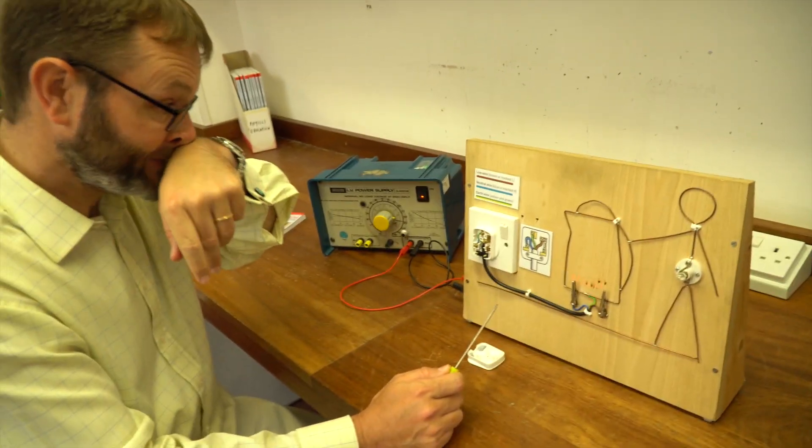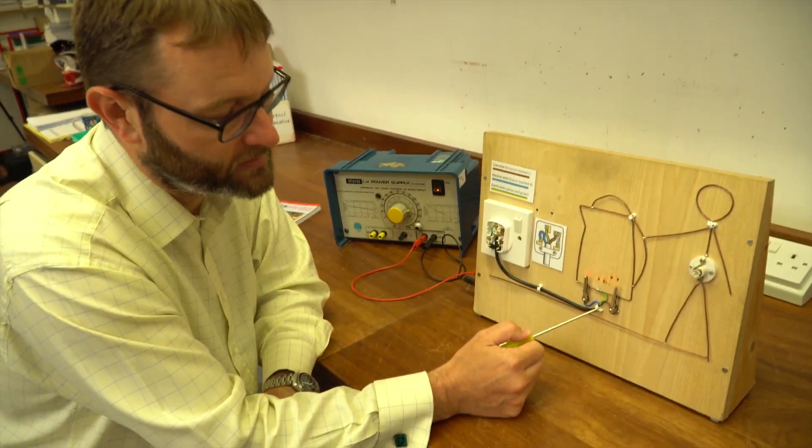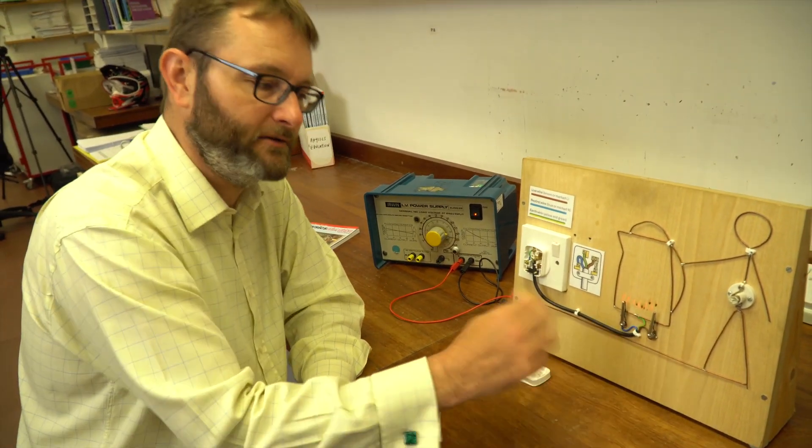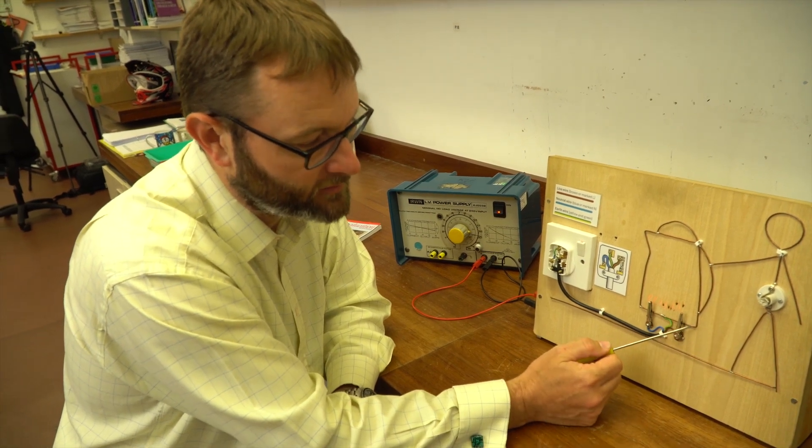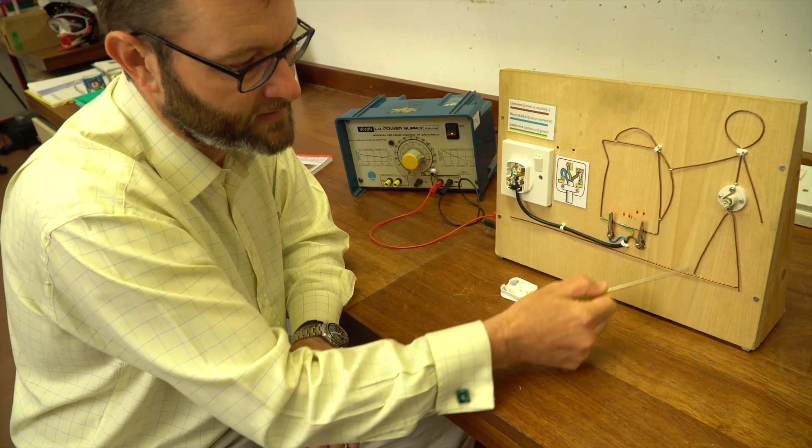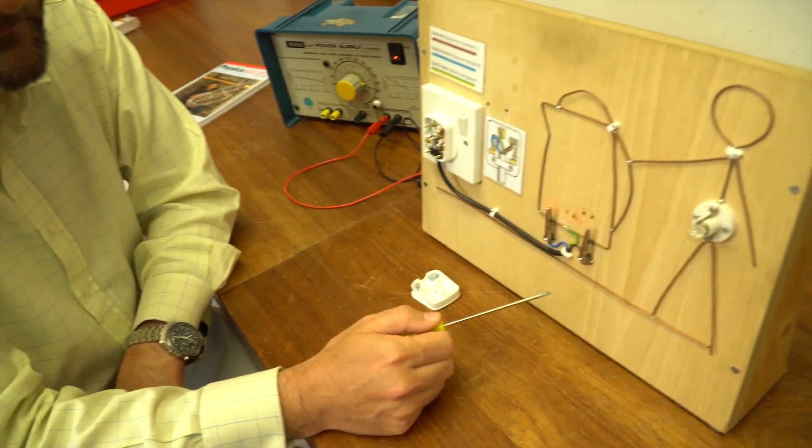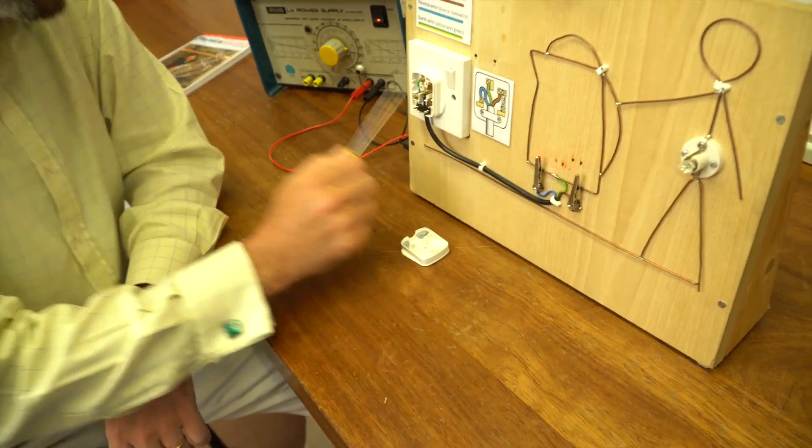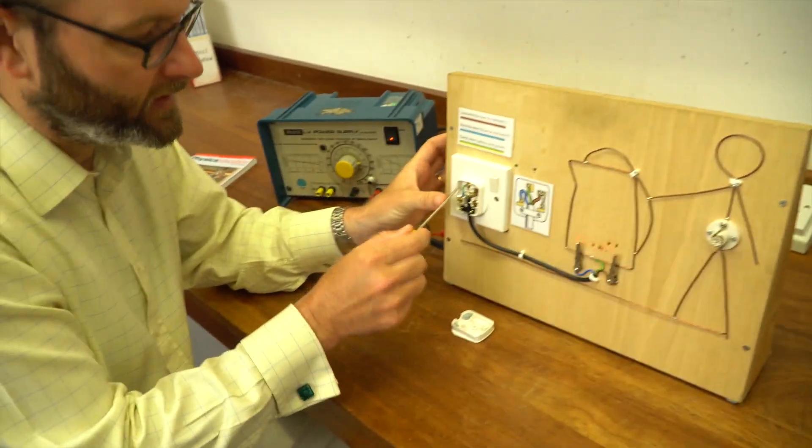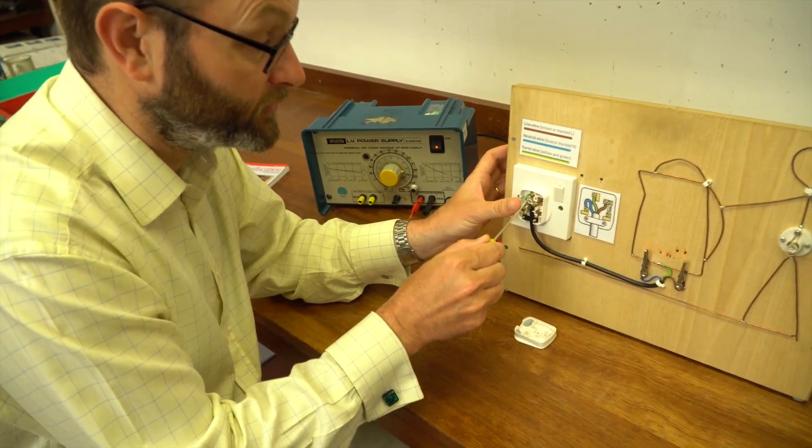But sooner or later as the kettle gets moved around it is possible, you hope it doesn't happen, but it's possible that that live wire could just work its way loose on its screw fitting and it might flail around inside the kettle. The thing that you don't want it to touch of course is the metal casing because if you do then this person will present a potential route for the current to go to ground. At this point you need to think about exactly what order you want to do this. This is the way that I do it. At this point I would say with the earth wire connected the person will be safe, but let's just to prove to the class why it would be a problem.